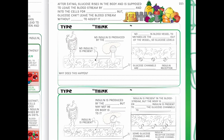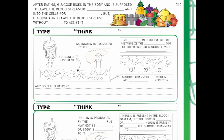We're going to go super basic and talk all about type 1, type 2 diabetes, and what exactly insulin is and how it works. After we eat food, glucose rises in the body and is supposed to leave the bloodstream by glucose channels and into the cells for energy production. But glucose can't leave the bloodstream without insulin to assist it into the cell.